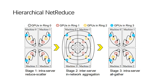We also propose a parallel AllReduce approach using NetReduce. Modern machine learning training clusters are usually equipped with multiple GPUs per machine, and these GPUs can communicate in different patterns. Constructing communication patterns should take the bandwidth gap between intra-machine and inter-machine links into consideration for better overall throughput.